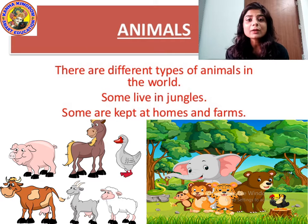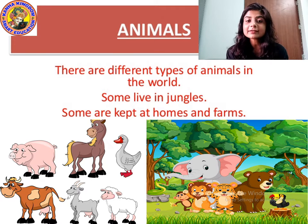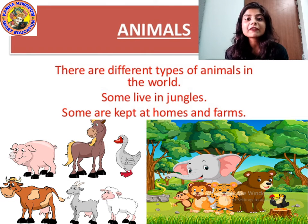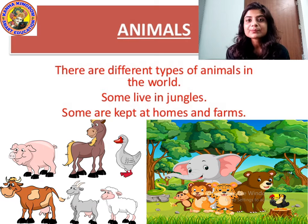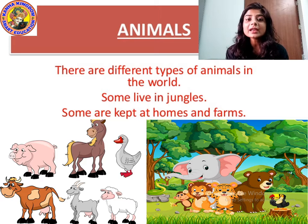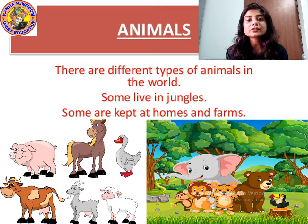Farm animals are cow, buffalo, goat, sheep, and horses. These are some animals kept in farms. And some animals who live in jungles are the wild animals like lion, tiger, monkey, and deer. These are some animals who live in jungles, at home, and in the farm, and there are different kinds of animals that we see around the world.